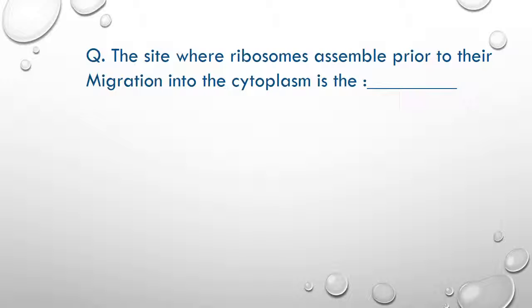The site where ribosomes assemble prior to their migration into the cytoplasm is the nucleolus.